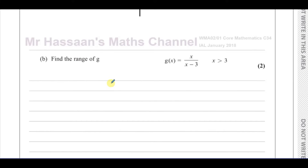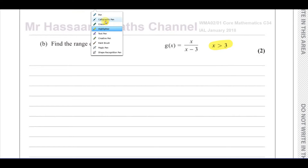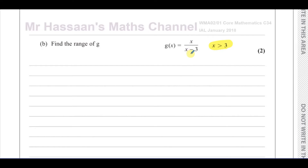Part B says find the range of function g. g(x) equals x over x minus 3, and the important thing is the domain is restricted to x is greater than 3. When you have a domain that's restricted, that will also affect the range of that function — it won't be the same as if it were unrestricted. Here we have a reciprocal function. What you should really try to do with the reciprocal function is try to draw it as if it were unrestricted first, and then get rid of the parts you don't need.